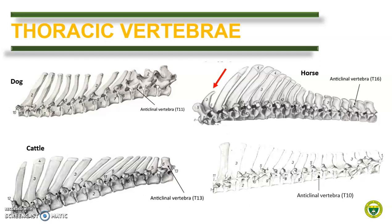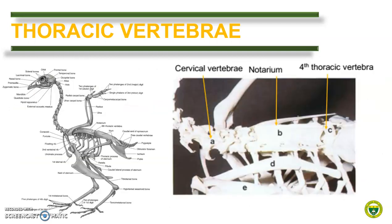The thoracic vertebra of cattle is characteristically larger than in the horse. In pig, the anticlinal vertebra is the 10th thoracic vertebra. In birds, some of the bones are fused to reduce weight for flight. One example is the notarium, which is composed of the last cervical vertebra and the first three thoracic vertebrae. Here you can see the notarium, and here is the fourth thoracic vertebra.